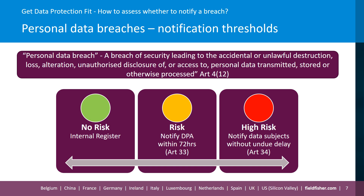Before thinking about how to assess whether to notify a data breach, we first need to understand what the GDPR and UK GDPR says about personal data breaches and notification obligations. The GDPR defines a personal data breach as any breach of security leading to the accidental or unlawful destruction, loss, alteration, unauthorised disclosure of or access to personal data that's transmitted, stored or otherwise processed. In essence, any security incident that affects the confidentiality, integrity or availability of personal data is likely to constitute a personal data breach — it's quite a broad definition.